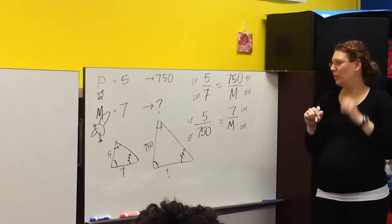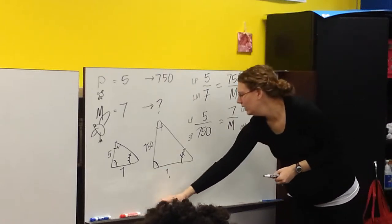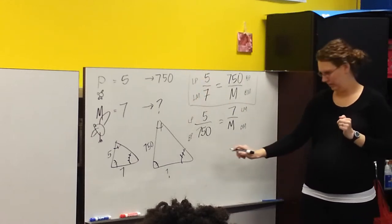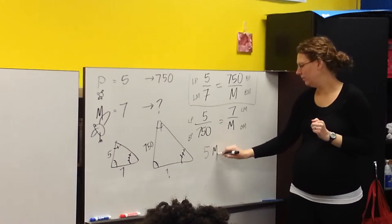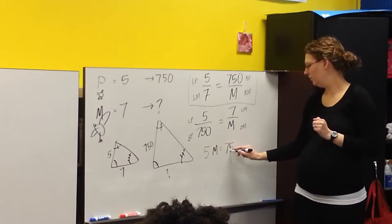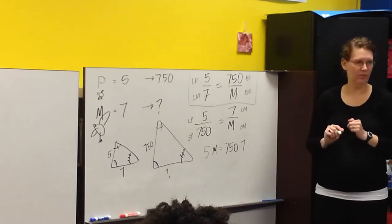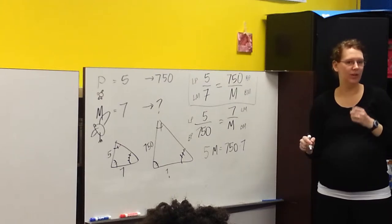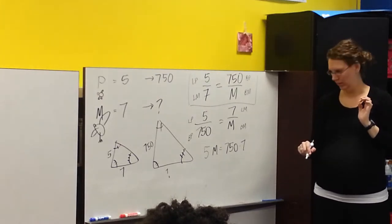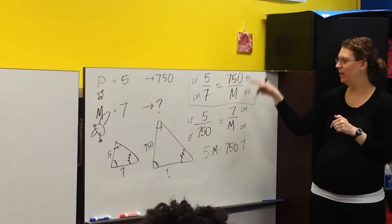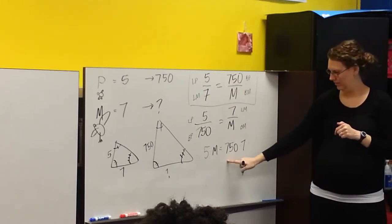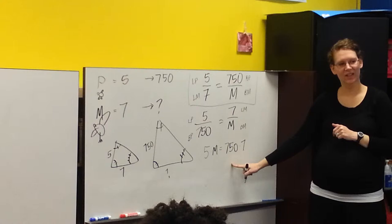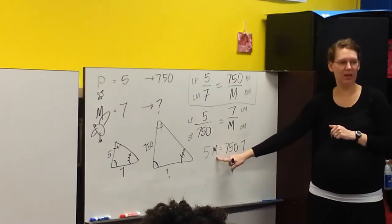Now we have to solve. So what do you want me to do to solve? How do we solve this? 750 times m. Good. Now we said yesterday, rather than solve this part, what can we do first? How do we get m by itself? That's the question. Instead of times one over five, I could divide by what? Five. Good.